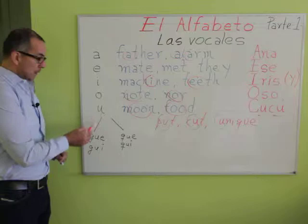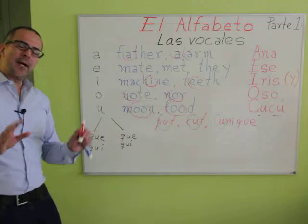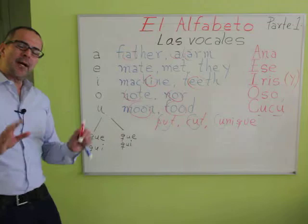So we have A, E, I, O, U — five vowels, five vowel sounds. There is a bit of an exception with the vowel U when it's between G and E, G and I, Q and E, or Q and I, but you don't have to worry about that for now. Just remember that we have five vowels and five vowel sounds: A, E, I, O, U — las vocales en español.